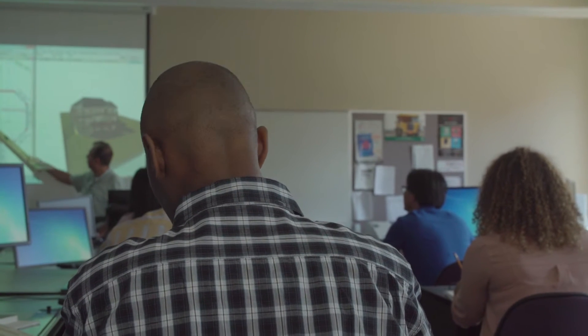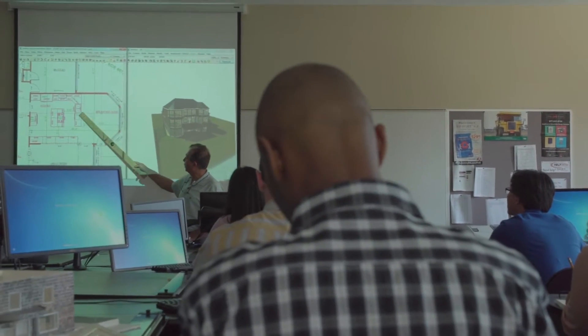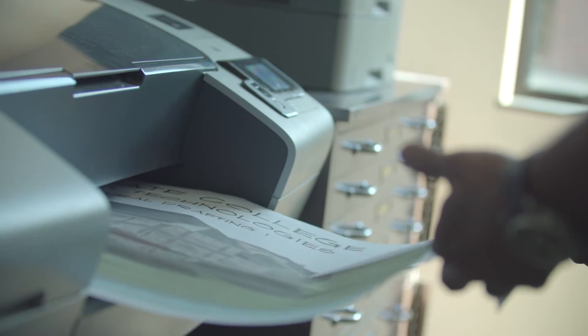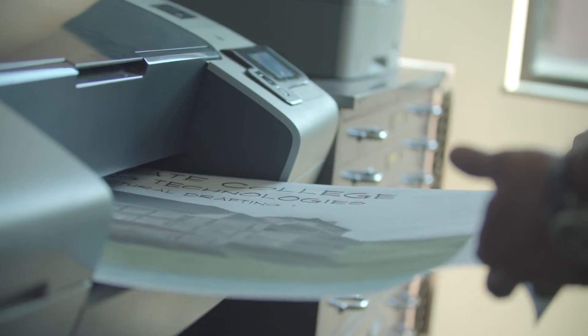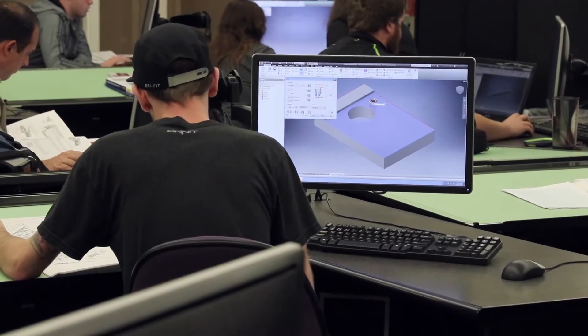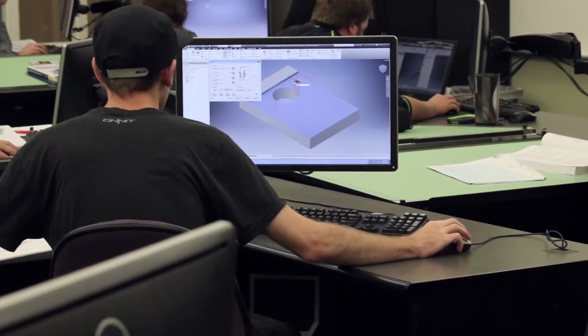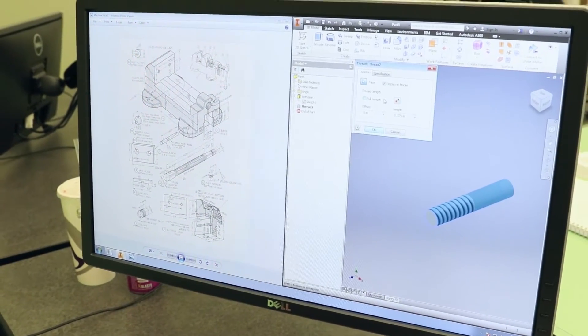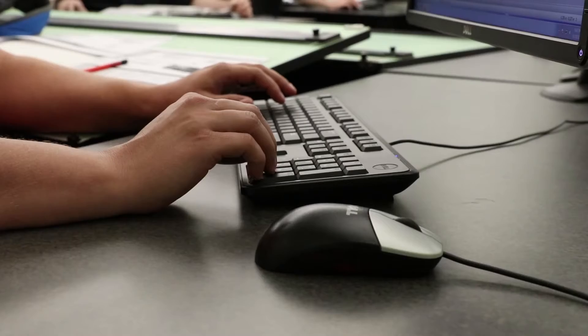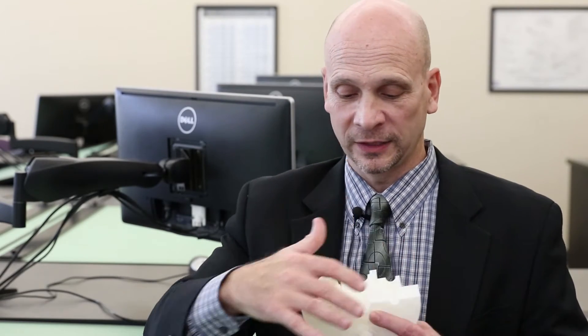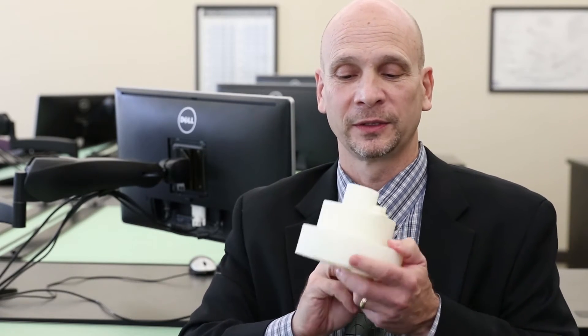The way we apply it in our curriculum is we start off with blueprint reading to begin with, and then we get into two-dimensional CAD, then three-dimensional CAD. Once we cover those concepts, we bring it into three-dimensional printing and we can actually see the object that was once designed as a 2D and 3D model on the screen, and now we can actually print it out to be that 3D object.